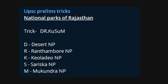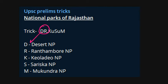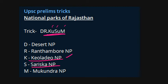We'll see the National Parks of Rajasthan. We can remember them by the trick 'Dr. Kusum.' D is from Desert National Park, R for Ranthambur National Park. Then Kusum: K for Kiyoladu National Park, S for Sariska National Park, and M for Mukundra National Park.